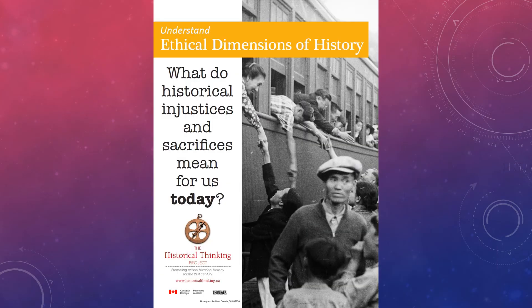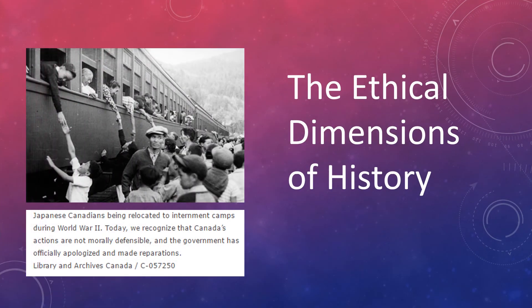Ethical dimensions of history: what do historical injustices and sacrifices mean for us today? This historical thinking concept is about looking at things in the past and examining how they happened in different contexts than ours now, and how we can still make ethical judgments about the past and actions that people took — to decide whether things in the past were right and why they were right, or whether they were wrong and why they were wrong.